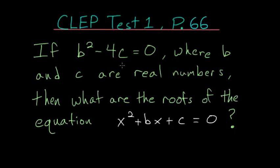If b squared minus 4c is equal to zero, where b and c are real numbers, then what are the roots of the equation x squared plus bx plus c is equal to zero?